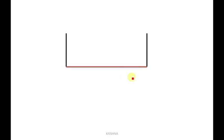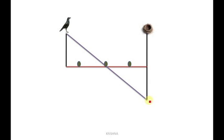Now, if both poles are the same size — not one shorter and one taller — what will happen? Suppose the crow is resting on one pole and the nest is on another pole, with three or four food grains in between. Again, we draw the reflected image of the nest pole. Between the crow's position and the end of that reflected image, we draw a straight line. Where that straight line intersects the road, a food grain is present at that point.